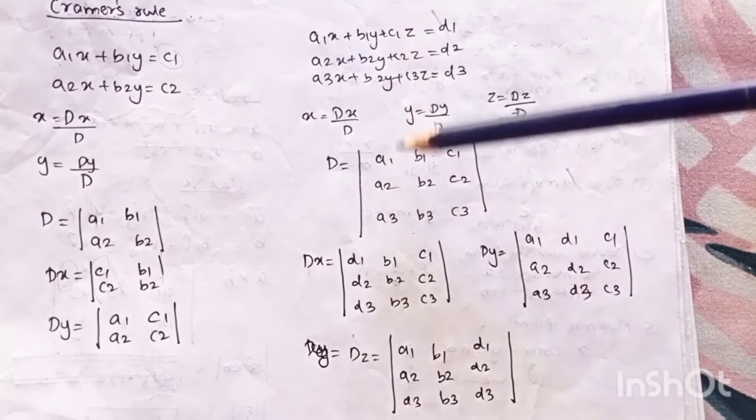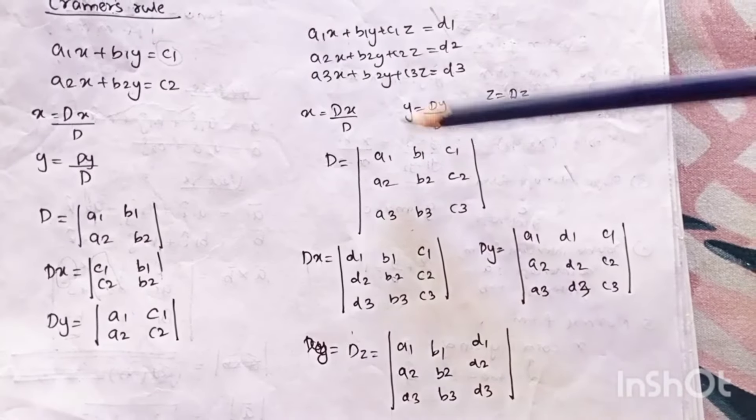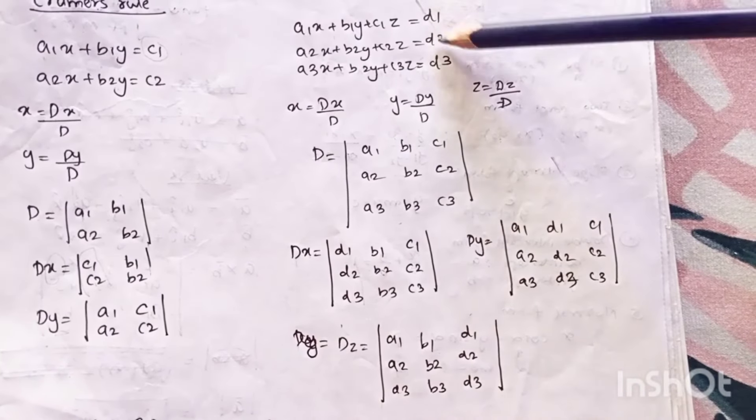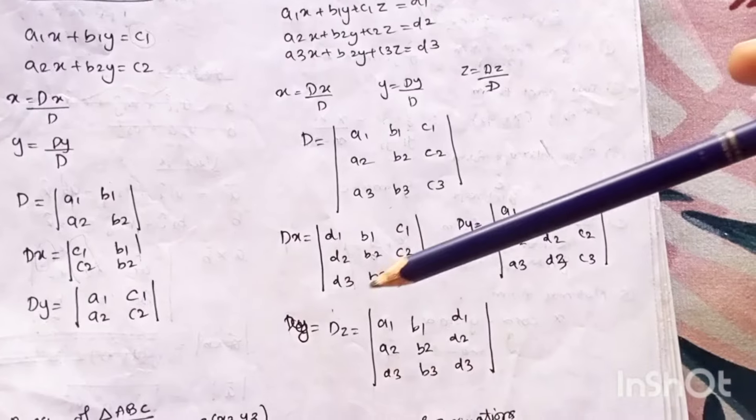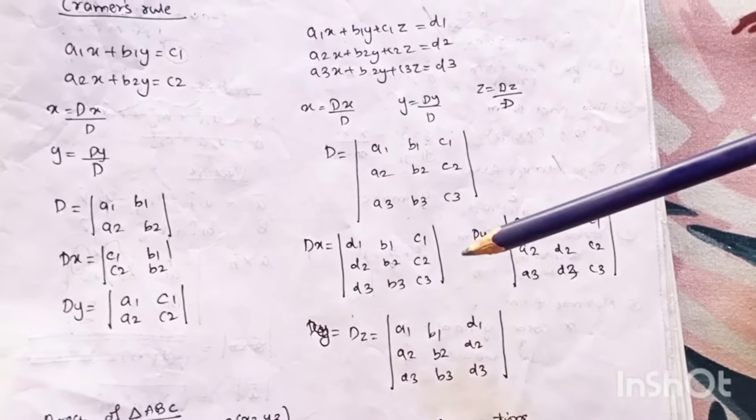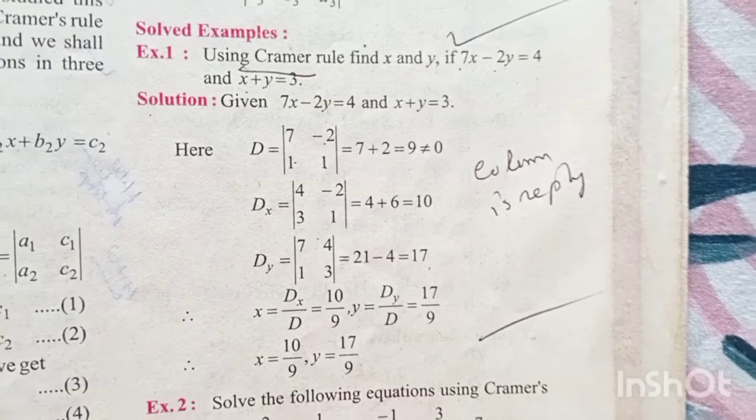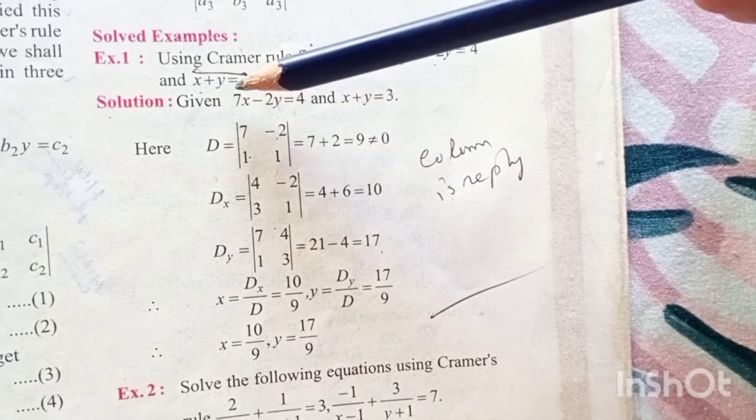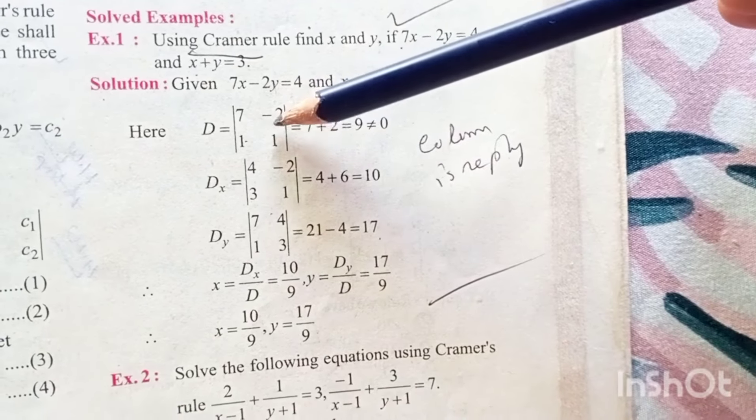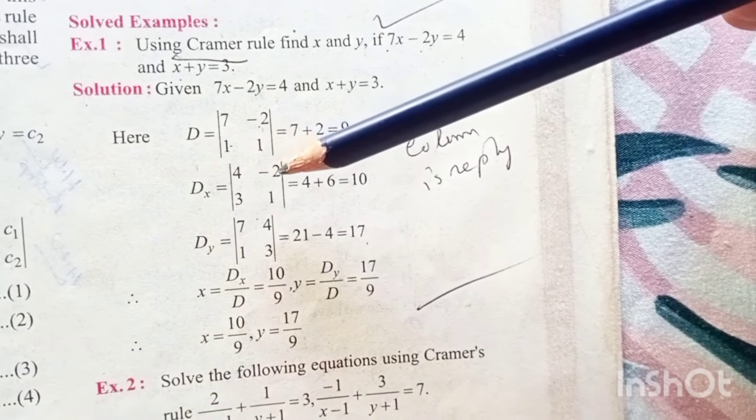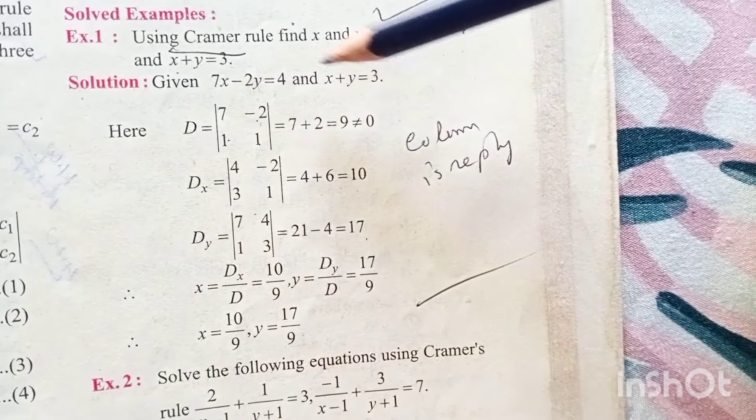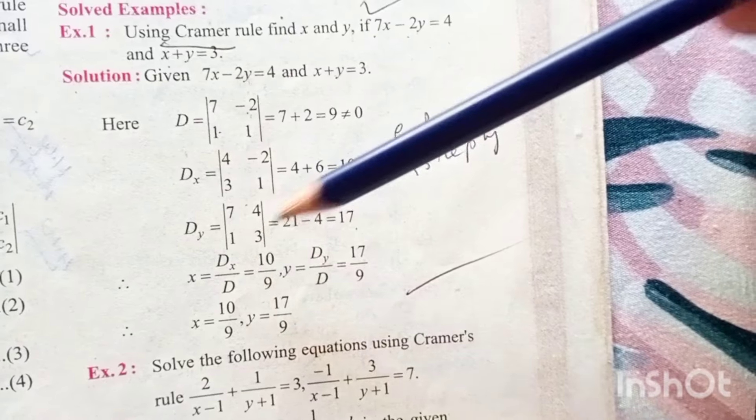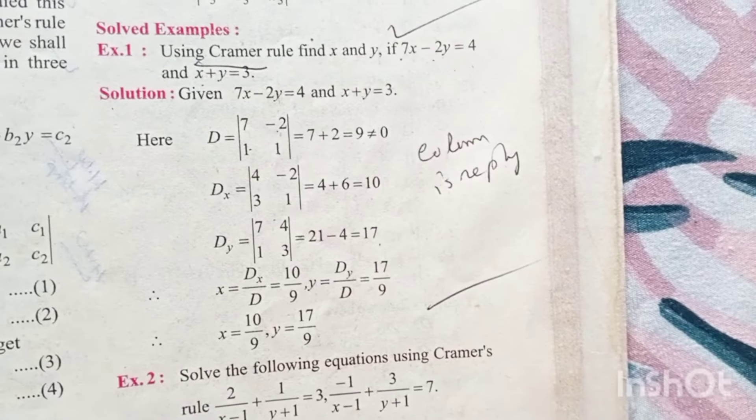If it is an equation in three variables same formula but now you will have a 3 by 3 determinant. For finding x you will put d1 d2 d3 in the first column. For y you will put it in second column and for z you will put it in the third column. Let us see one question. Using Cramer's rule find x and y. 7x minus 2y is 4, x plus y equal to 3. So d is equal to 7 minus 2, 1, 1 and for dx it will be 4 and 3 in the first column which are the constants and similarly for dy 4 and 3 in the second column and simply substituting you get x and y.